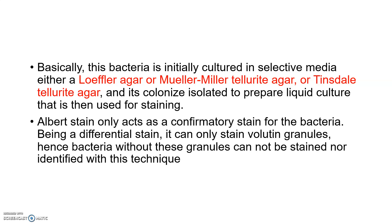Albert stain acts only as a confirmatory stain for the bacteria. Being a differential stain, it can only stain volutin granules. Bacteria without these granules cannot be stained and are not identified by this technique. This technique is mainly used to detect the presence of volutin granules.